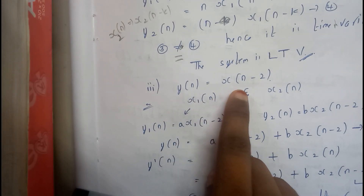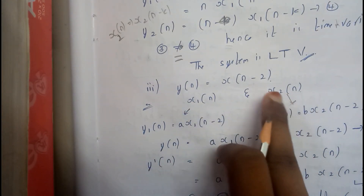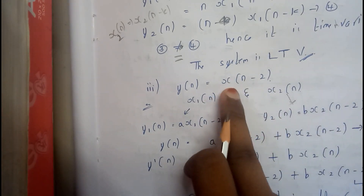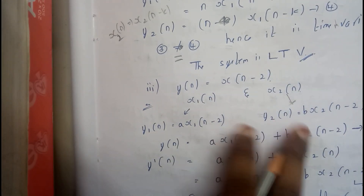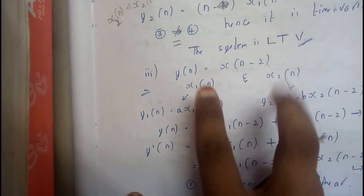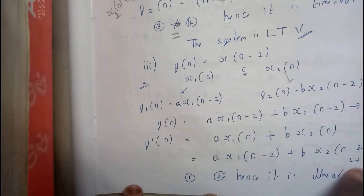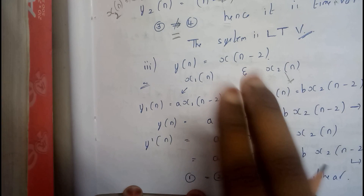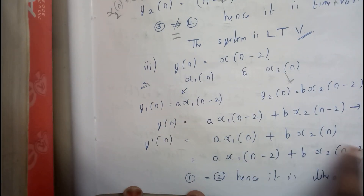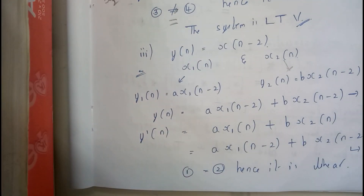Let us go through one more example: Y(n) = X(n − 2). The first signal is X1(n) and the second is X2(n). We multiply with A and B respectively and add them. In the other case, we multiply A and B, add A·X1(n) + B·X2(n), and pass through the system, replacing x with (n − 2). Both equations are exactly the same, so it is a linear system.